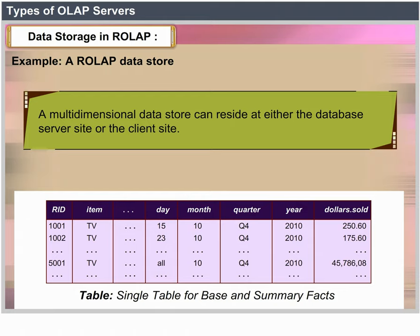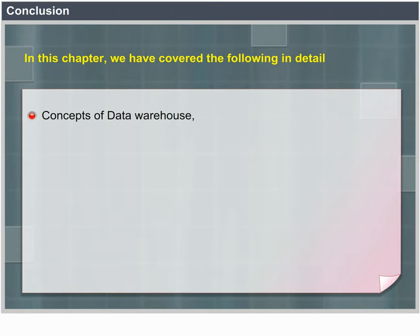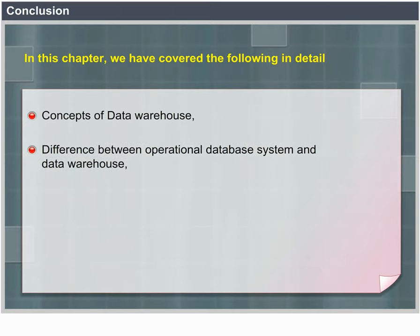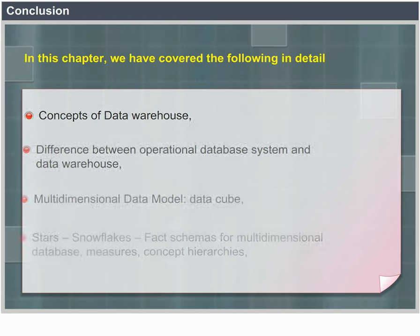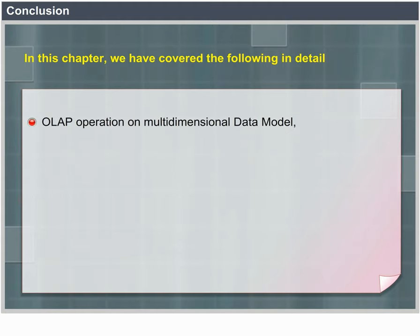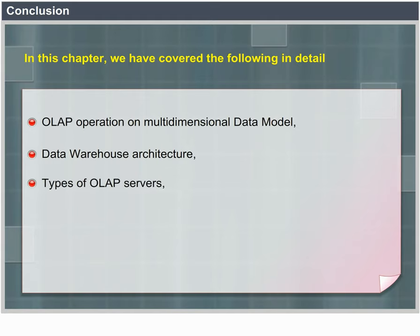Conclusion. In this chapter we have covered the following in detail: Concepts of Data Warehouse, Difference between Operational Database System and Data Warehouse, Multidimensional Data Model and Data Cube, Star and Fact schemas for Multidimensional Databases, Measures, Concept Hierarchies, OLAP Operations on Multidimensional Data Model, Data Warehouse Architecture, Types of OLAP Servers, Life Cycle of Data Warehouse Implementation, and the Relationship between Data Warehouse and Data Mining.